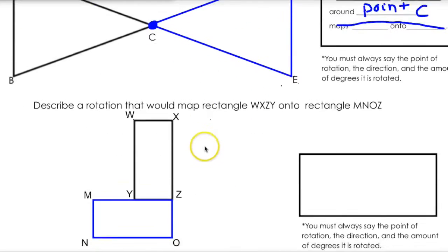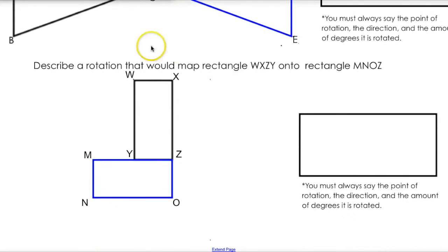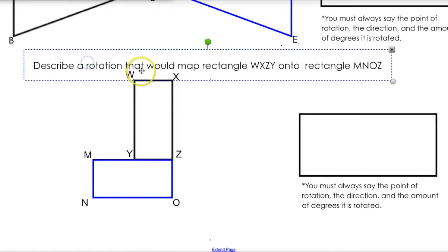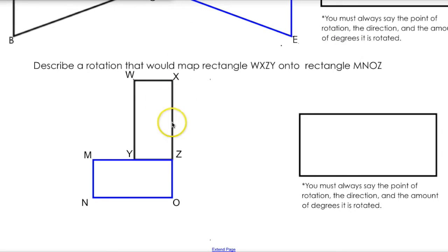You might be saying: what do I do if I can't turn things? Well, we really do kind of have to eyeball it. We want to describe a rotation that maps rectangle WXZY onto MNOZ. First, start by figuring out your center of rotation — where are we going to rotate this around? A good place for our hinge is right over here, point Z. Let's put our rotation right there.